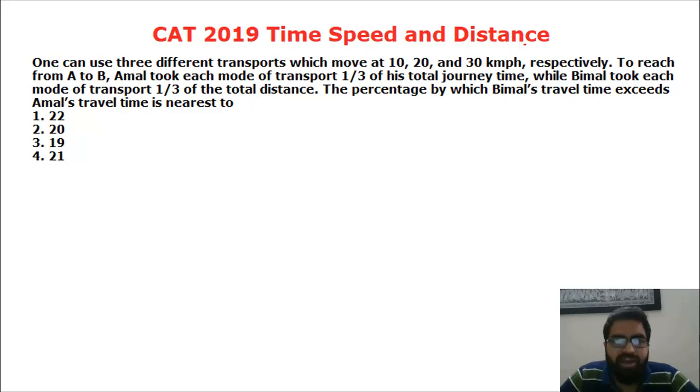Welcome to this video on CAT 2019 Time, Speed and Distance Solving. This question talks about arithmetic mean and harmonic mean.